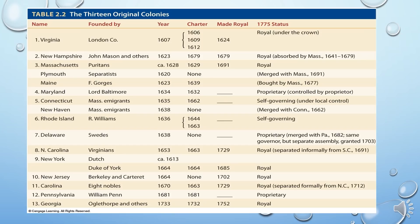Here I've implemented a chart of the 13 original colonies, showing their year, their charter, when they were made royal, and what their status was in 1775.